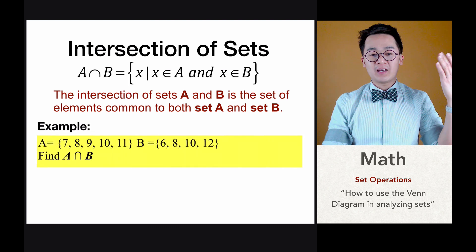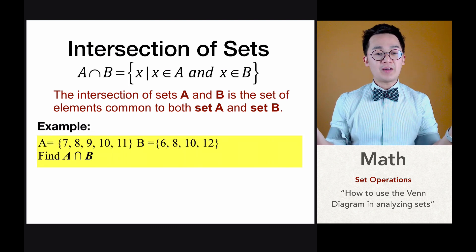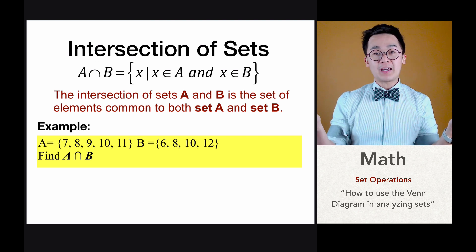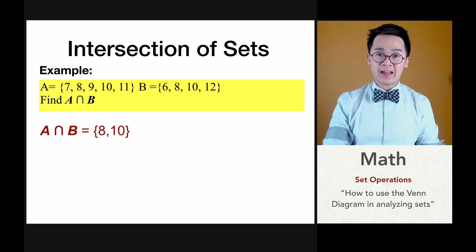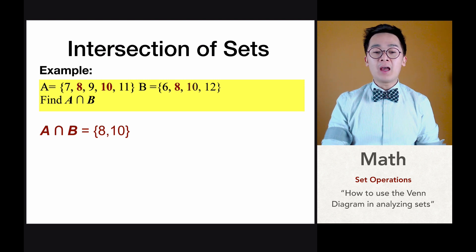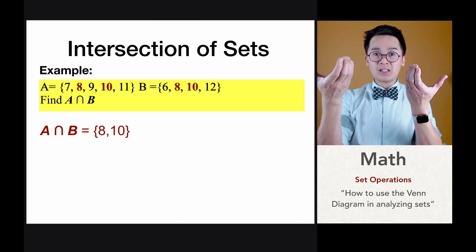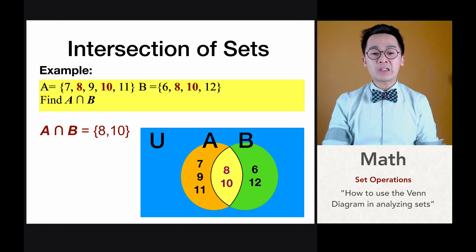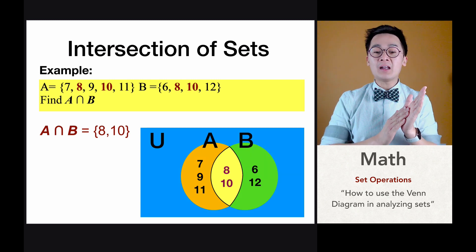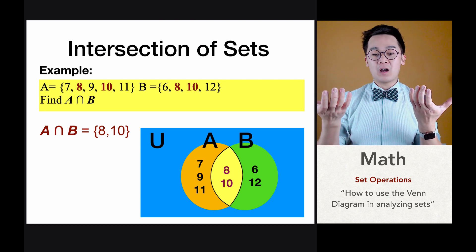Let's say we have set A containing 7, 8, 9, 10 and 11, and set B containing 6, 8, 10 and 12. If we're going to find the intersection of A and B, it will be the distinct elements found in both set A and set B — and in this case they are 8 and 10. In the Venn diagram, two intersecting circles represent A and B, and the intersection region contains 8 and 10.